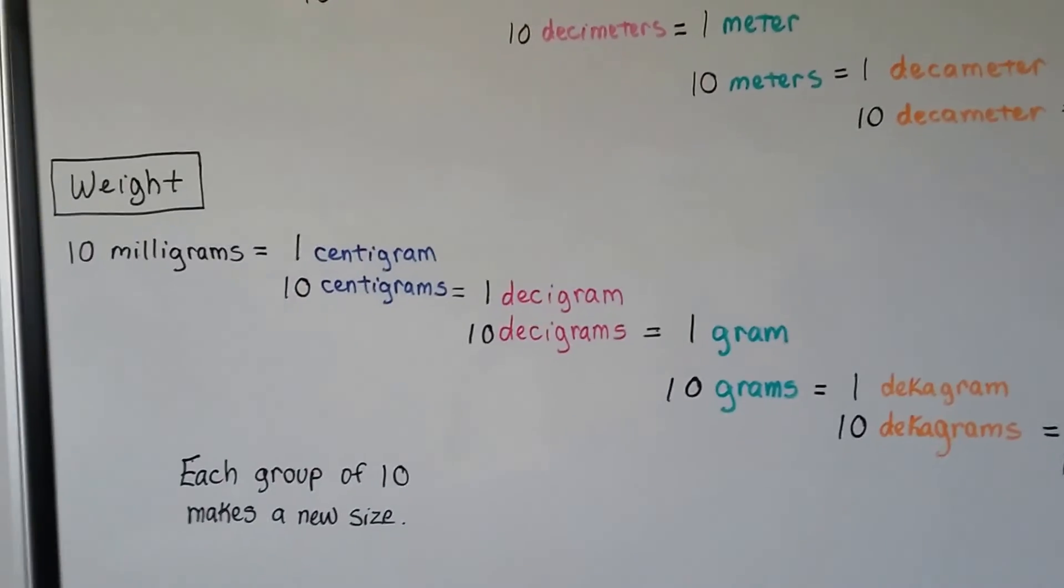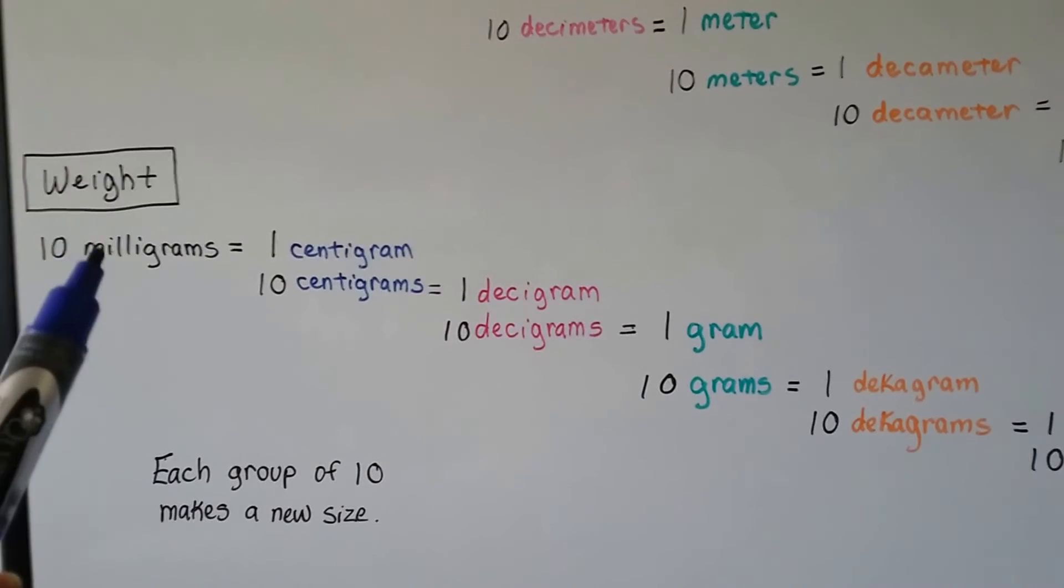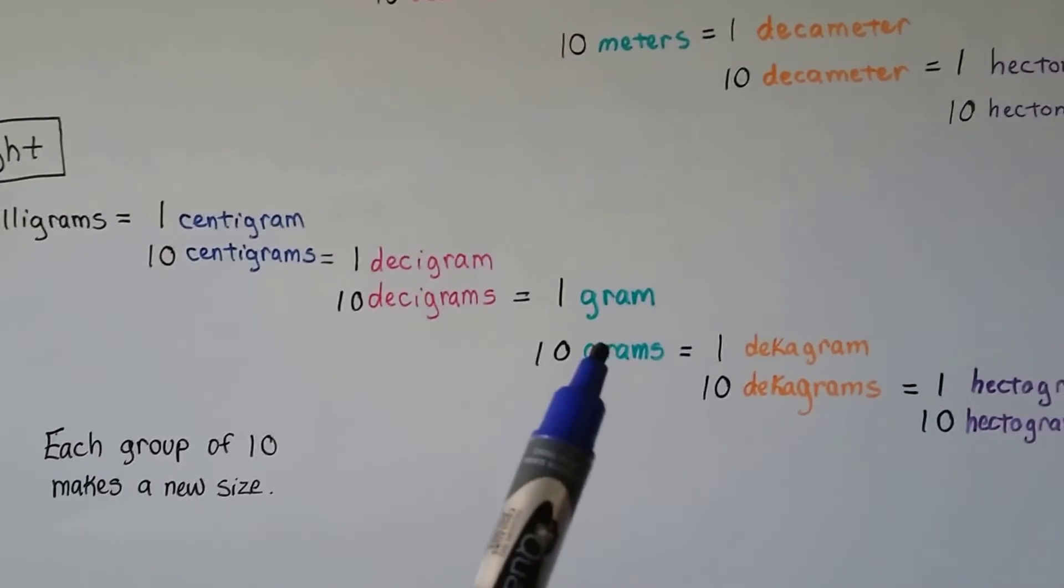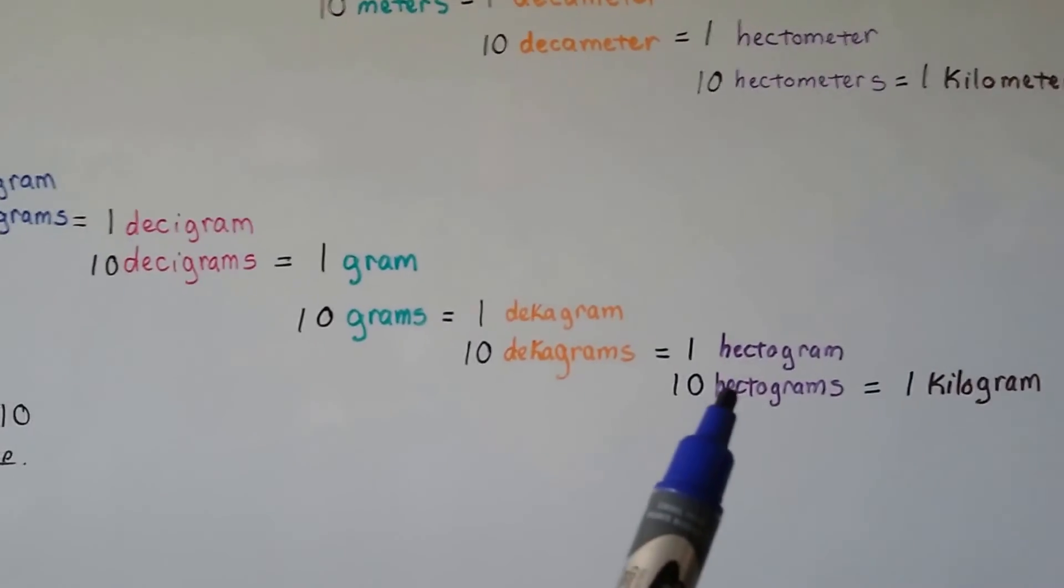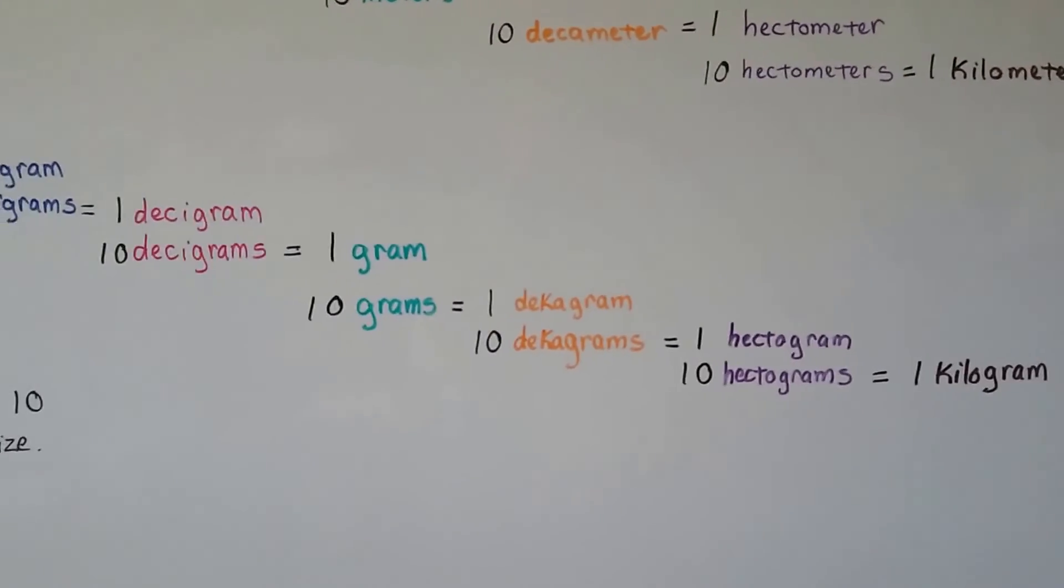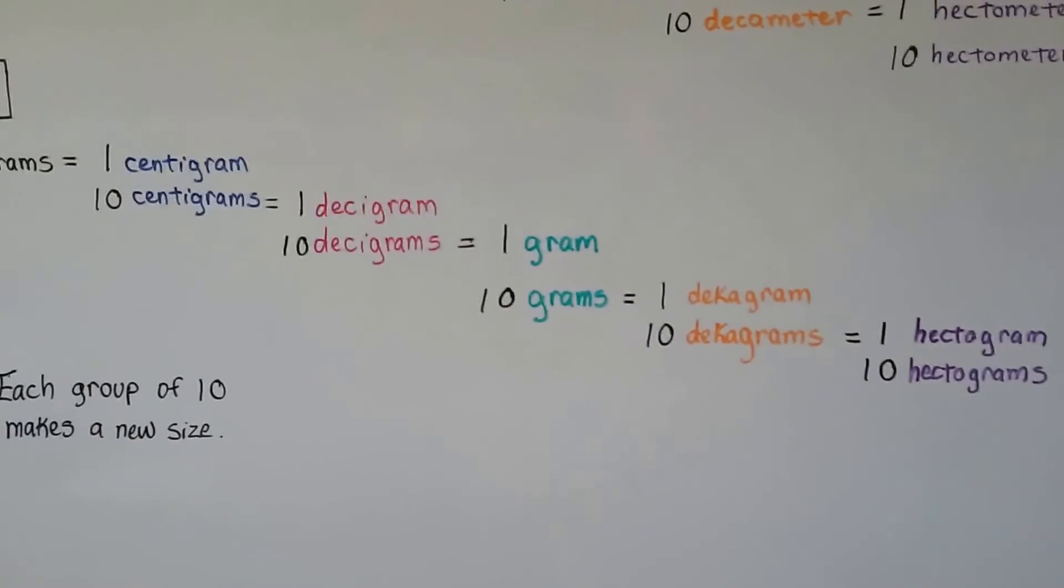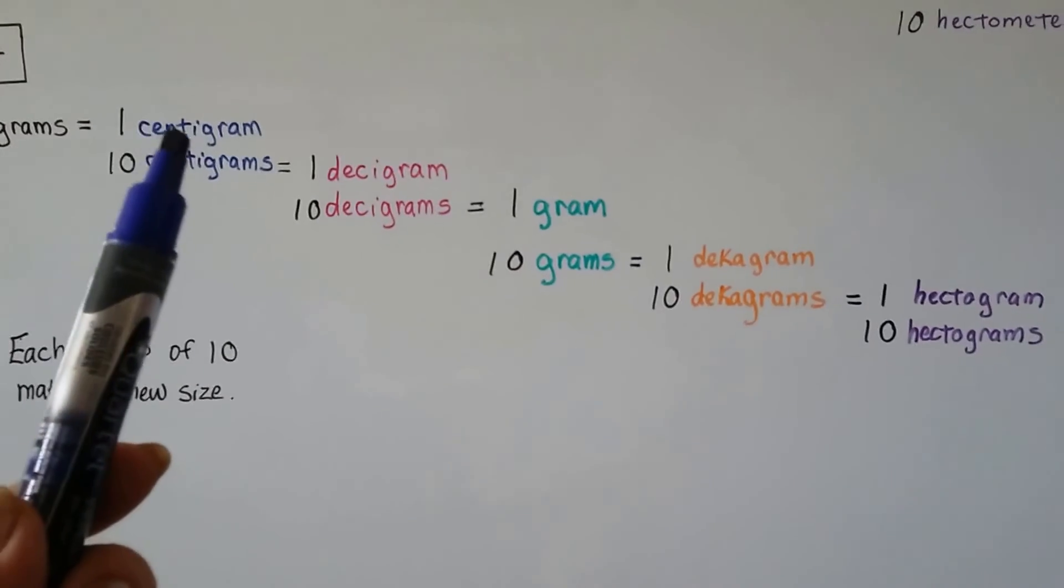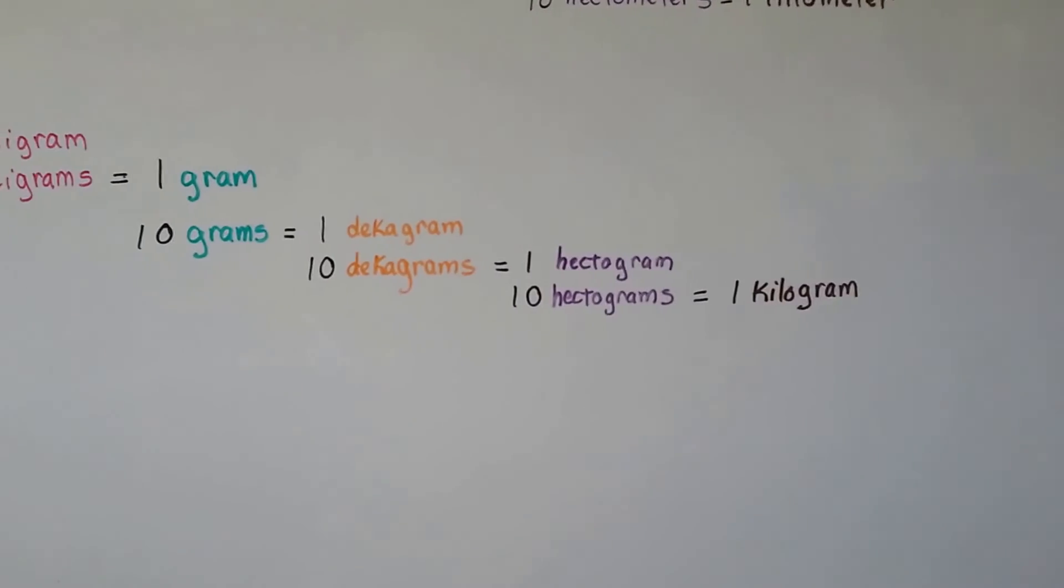Well, in weight, it does the same thing. If you look, it's all based off of a gram. We can have milligrams, centigrams, decigrams, grams, then decagrams, and that's usually spelled with a K, hectograms, and then the kilogram. See? And every time we get 10 of them, it moves to a new size. See that? That's how the metric system works. So a thousand grams is one kilogram. That's what we talked about before, right?